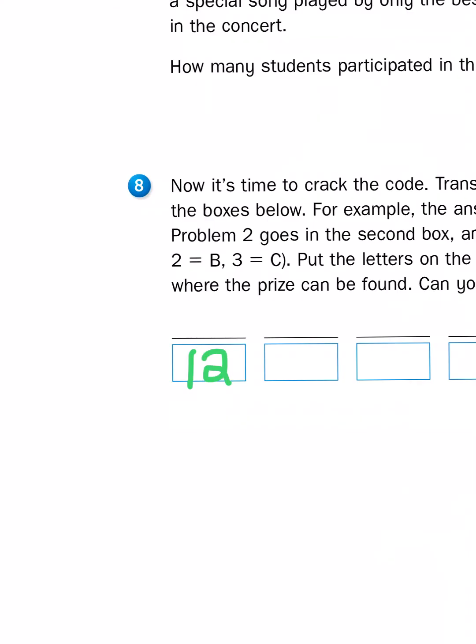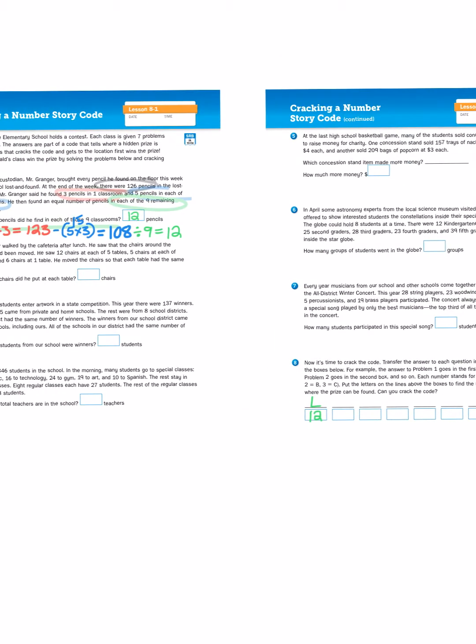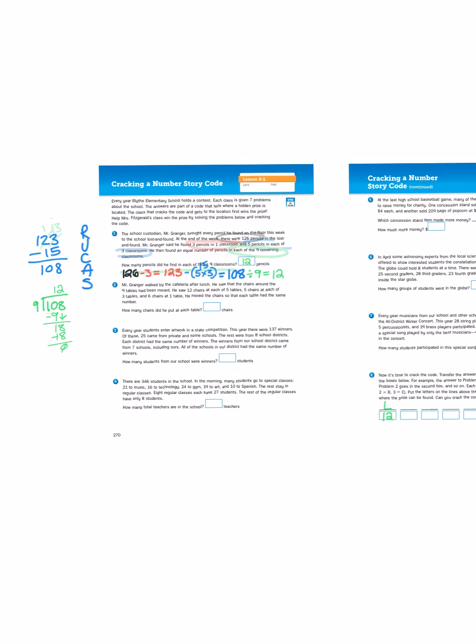If I just count off on my hands A, B, C, D, E, F, G, H, I, J, K, L. L is the 12th letter of the alphabet, so my first letter is L. And that is one step closer to solving the problem or cracking the code.